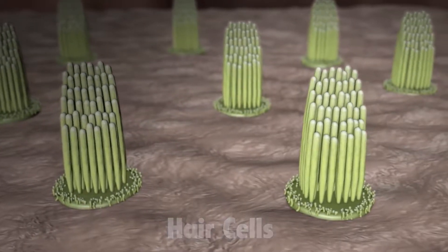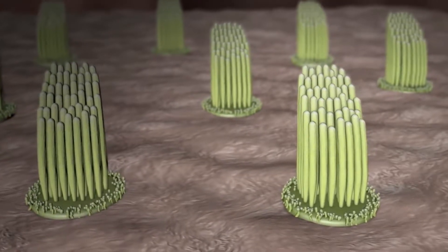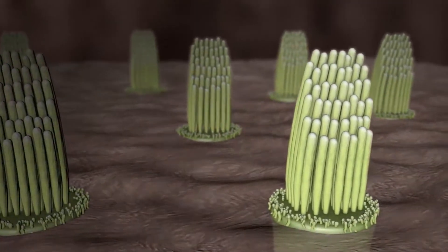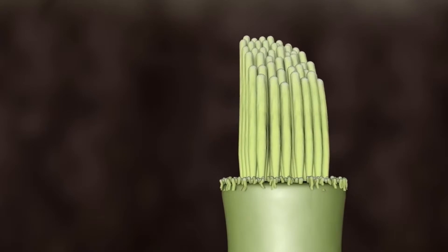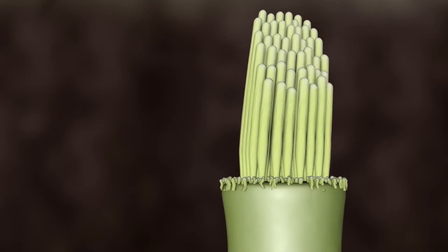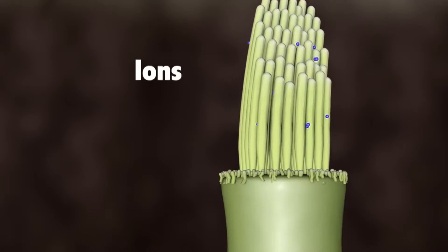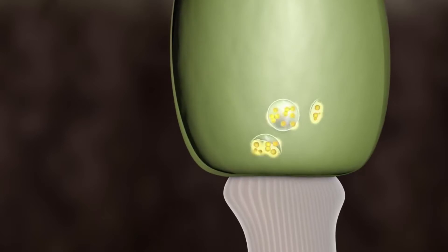The hair cells inside the cochlea ride these waves, and the hair bundles are moved. The hair bundle on top of the hair cell turns these movements into electrical signals. As the hair bundles are moved, ions rush into the top of the hair cells, causing the release of chemicals at the bottom of the hair cells.